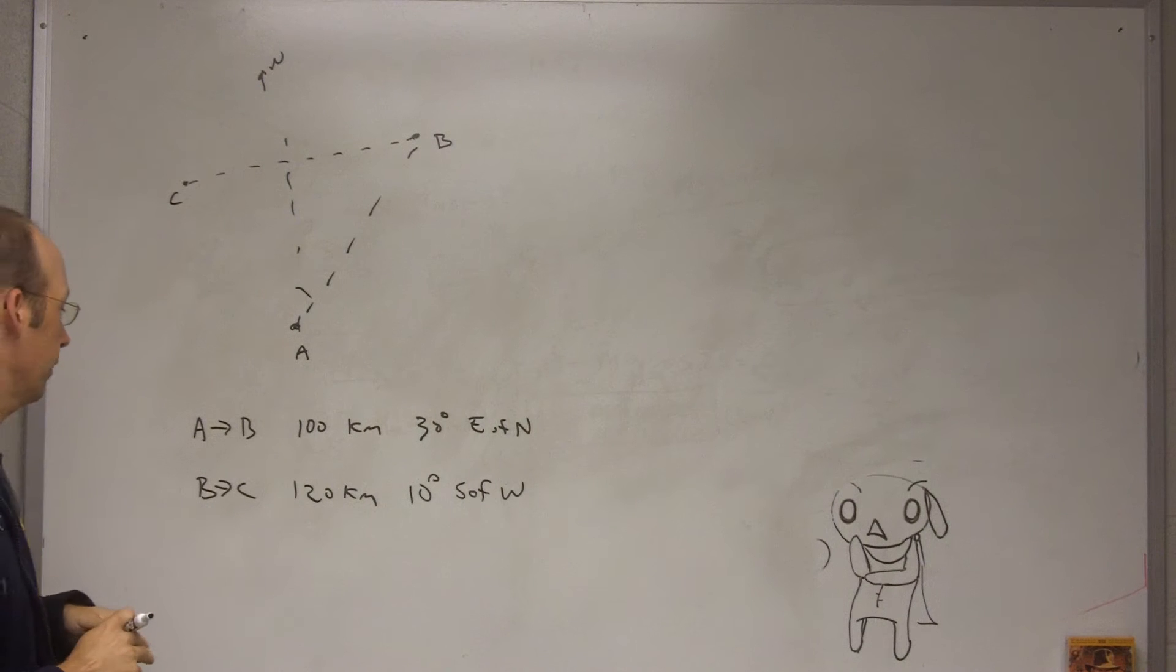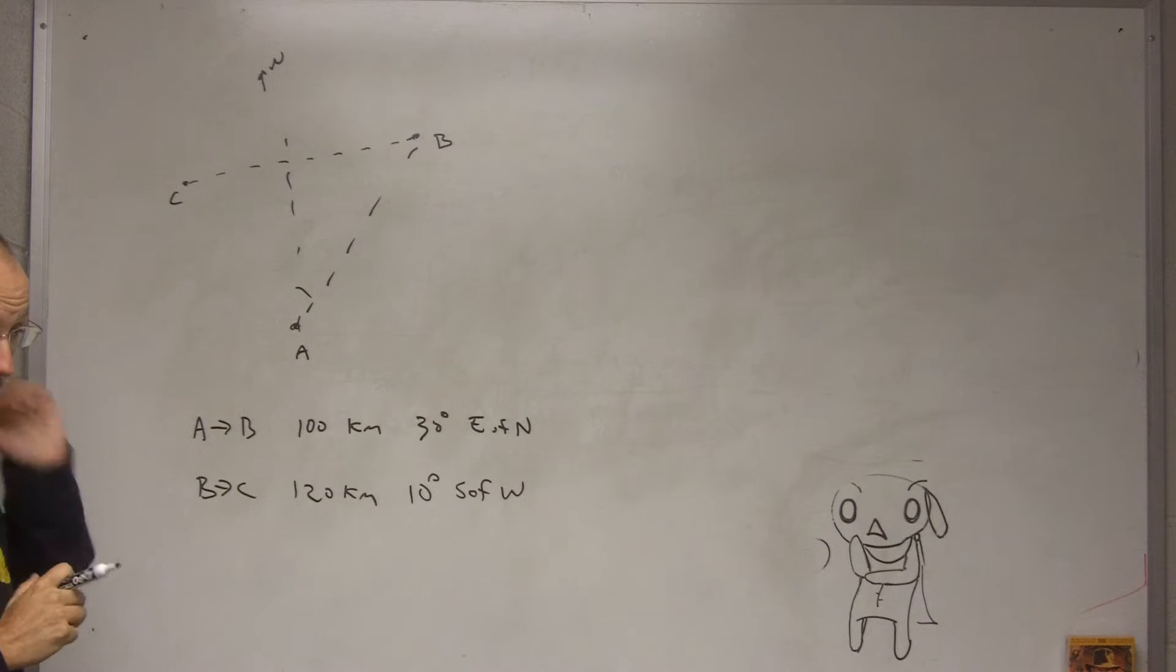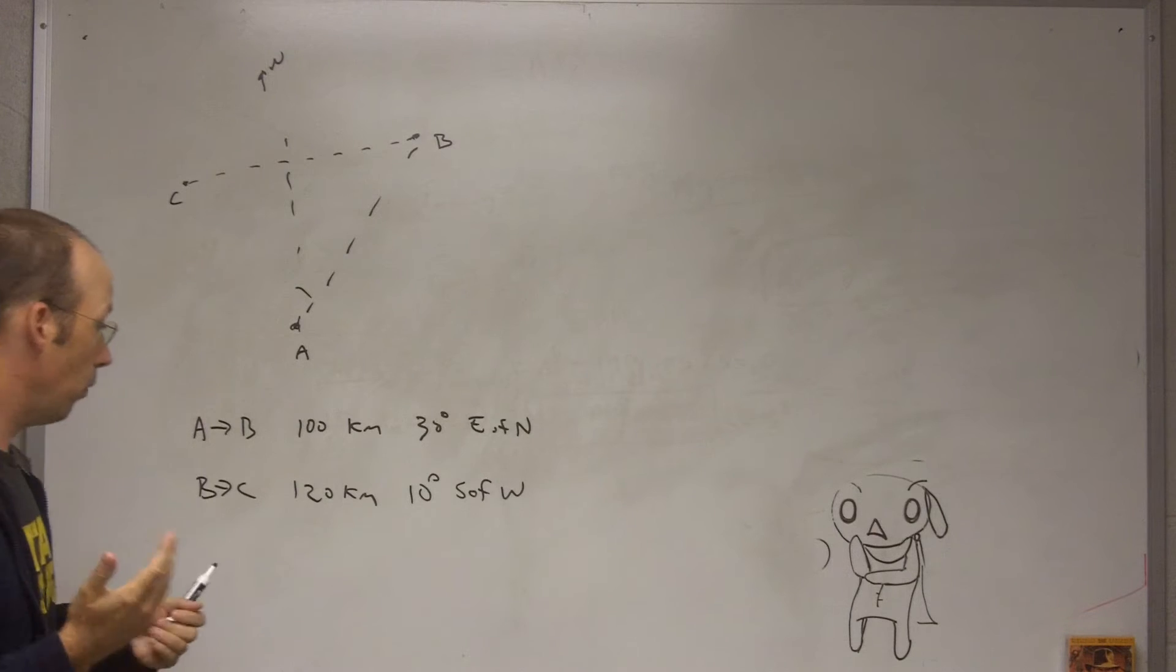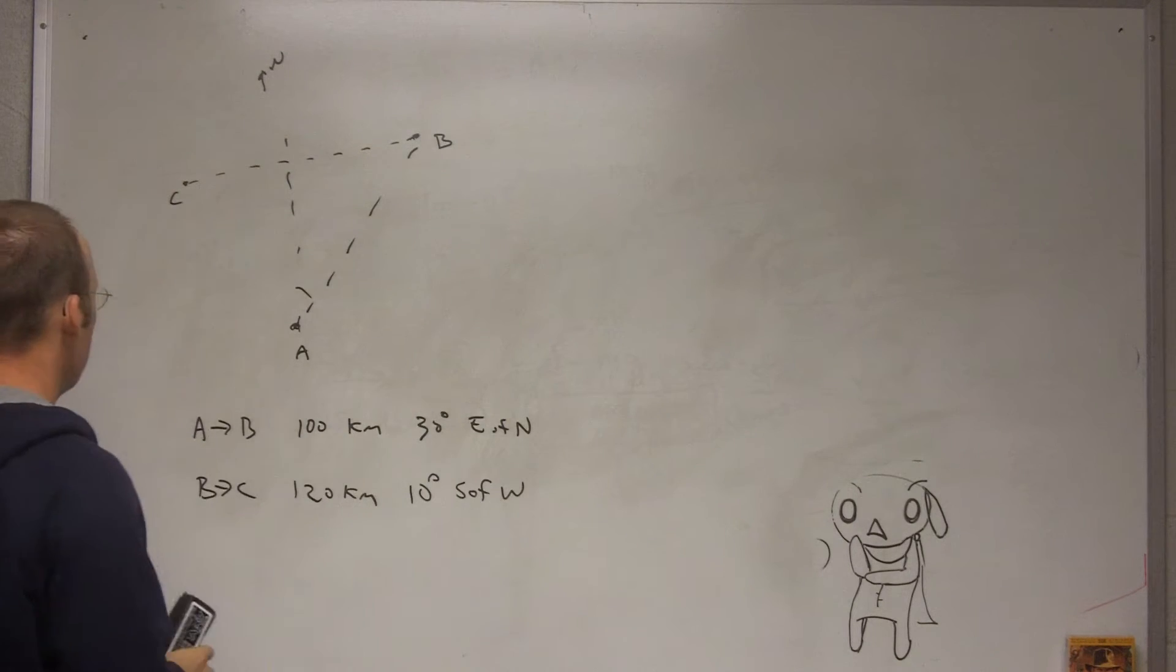So the question is, if you fly from A to B and then B to C, how far is it to go back to City A and what direction would you have to fly? So that's what we want to find. So how do we do this problem?